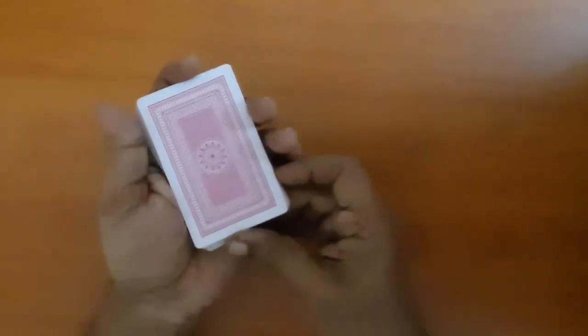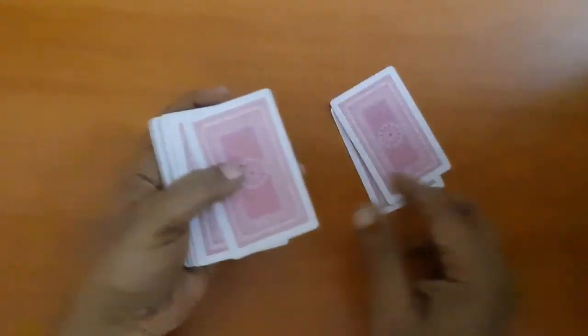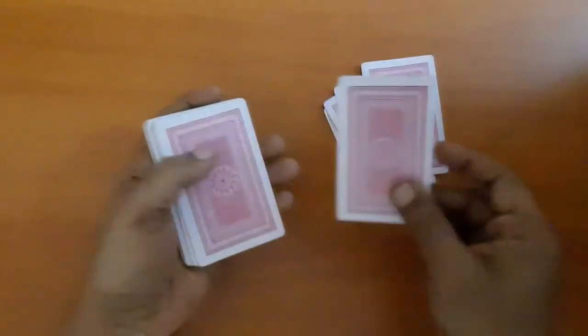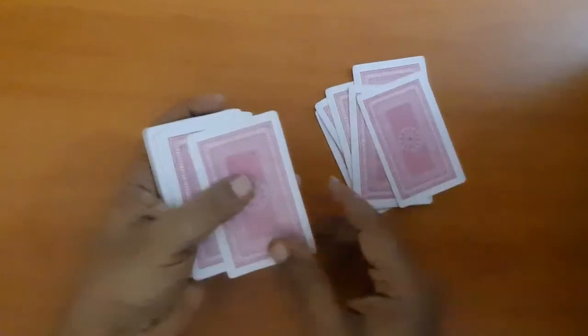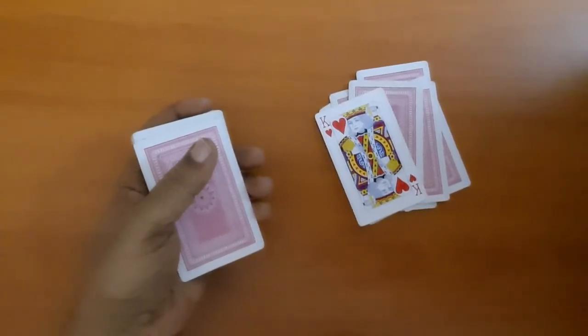Say any number from 1 to 27. Ten. One, two, three, four, five, six, seven, eight, nine, ten. Your card is King of Hearts. Okay. Correct.